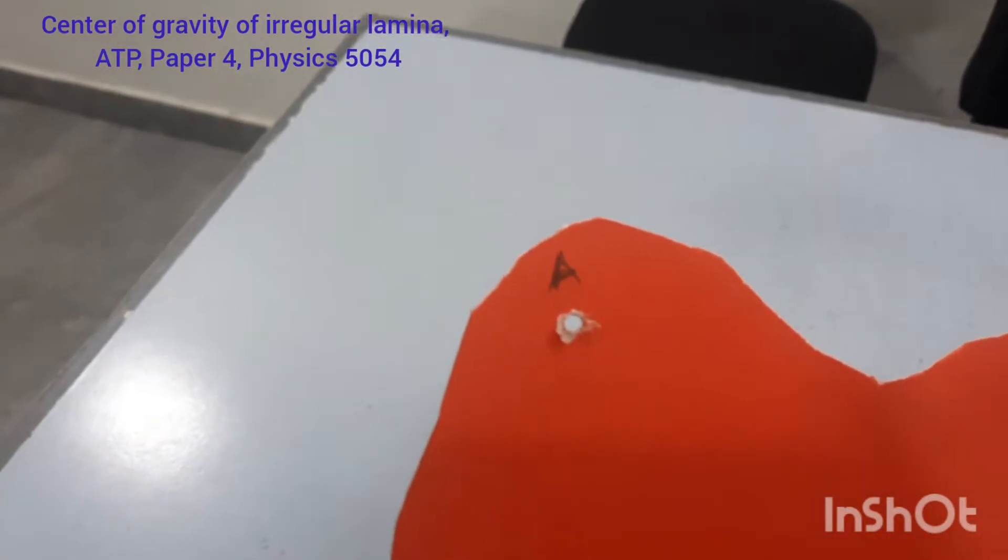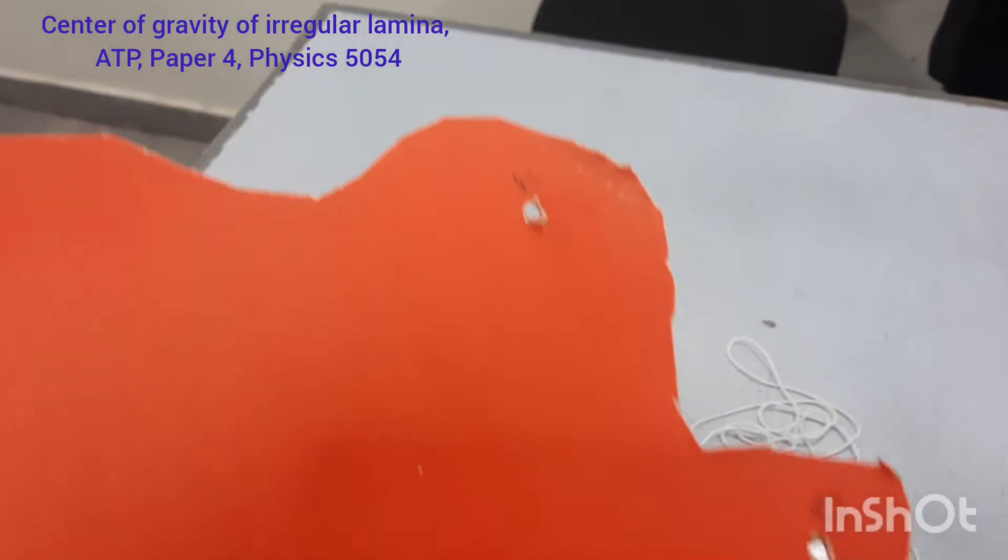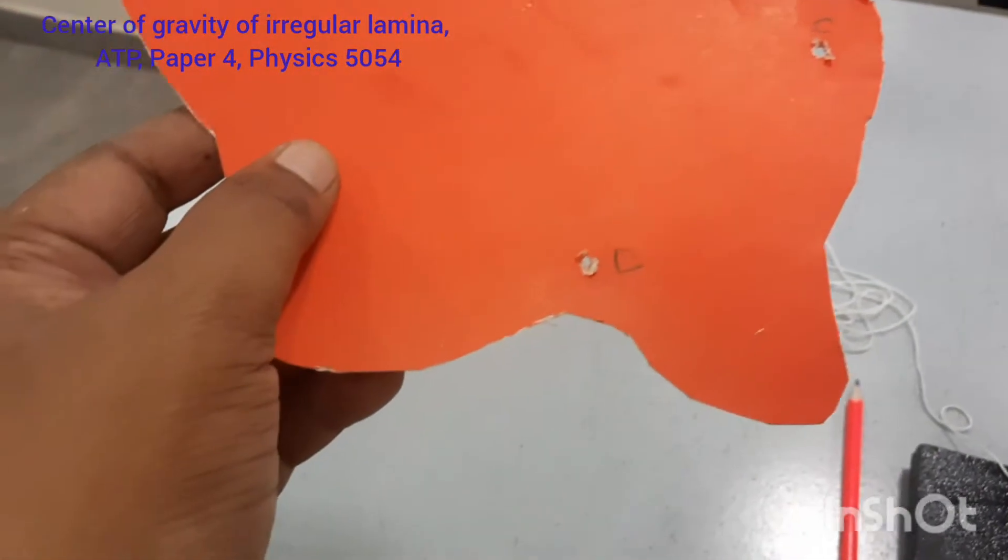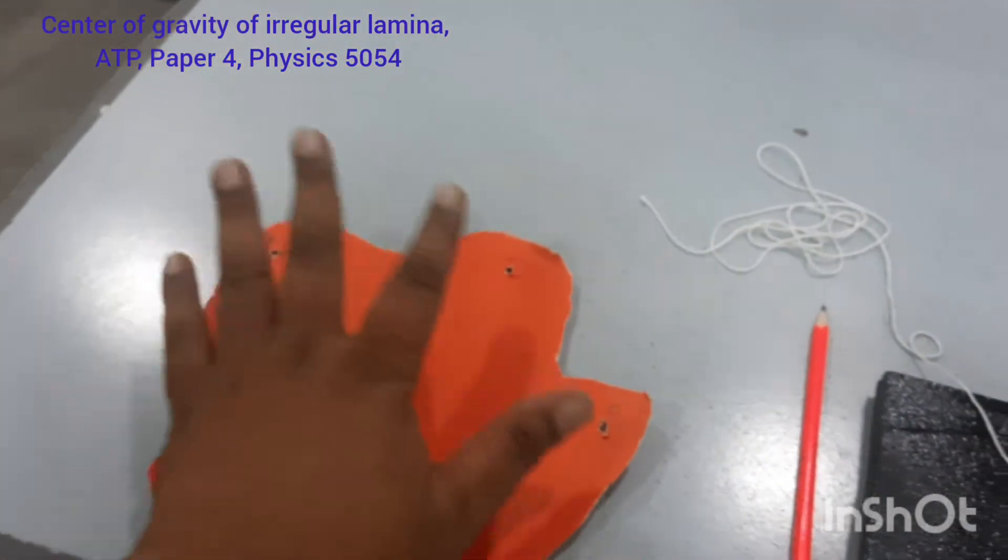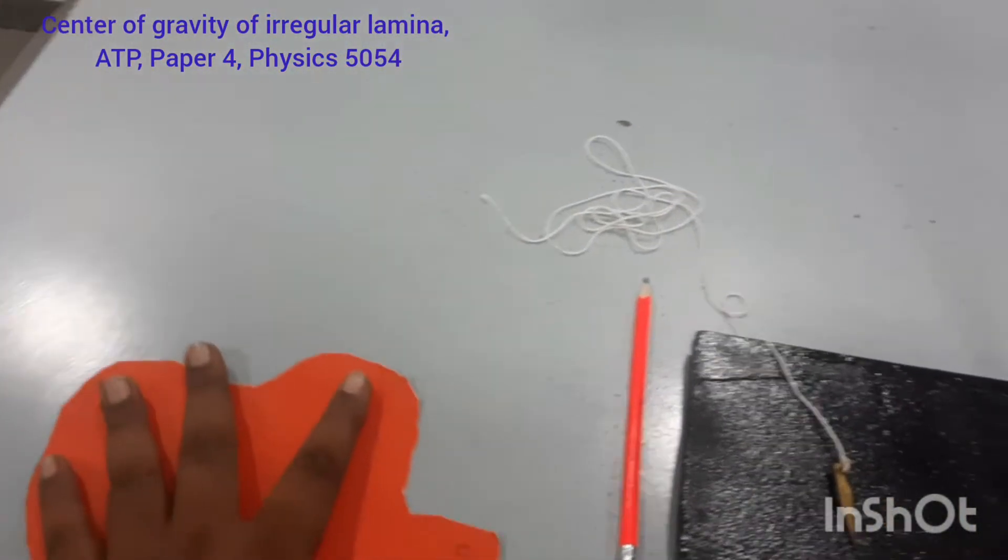I have named this hole as A, I have named this hole as B, this as C and this as D. So now the procedure is very simple.